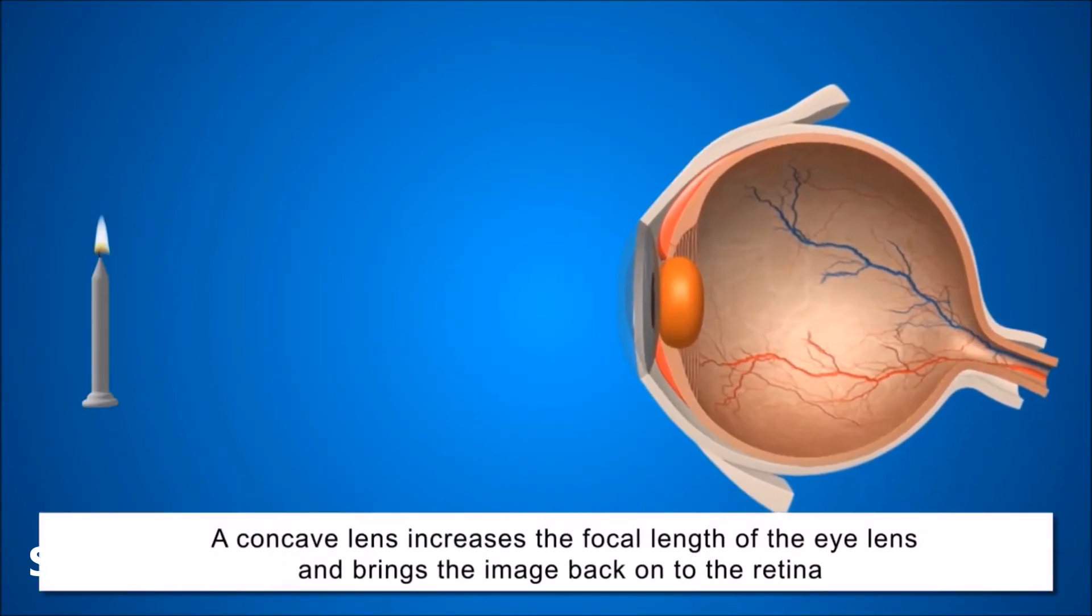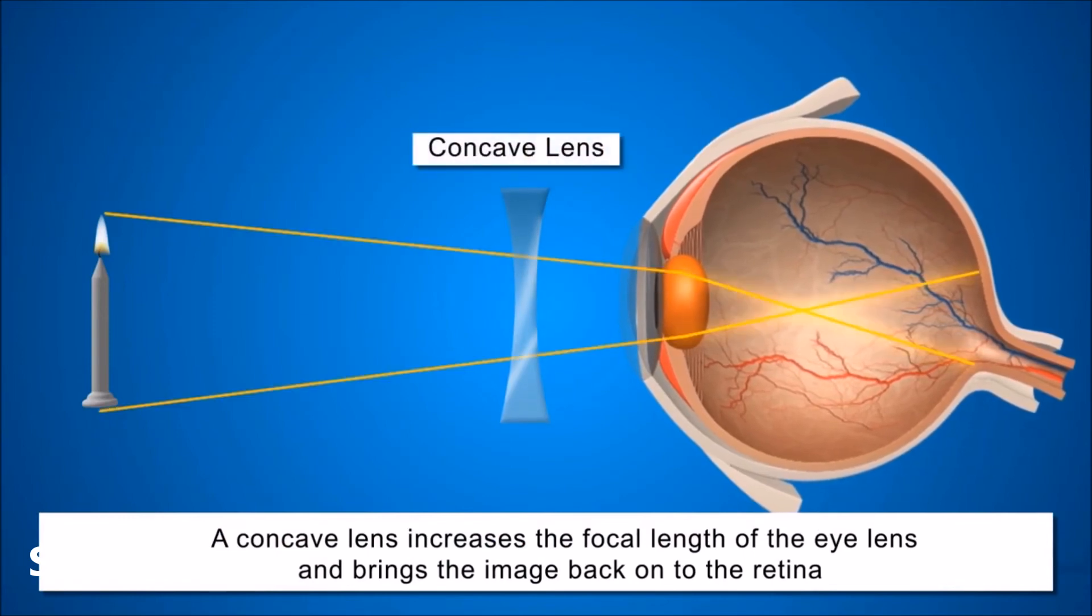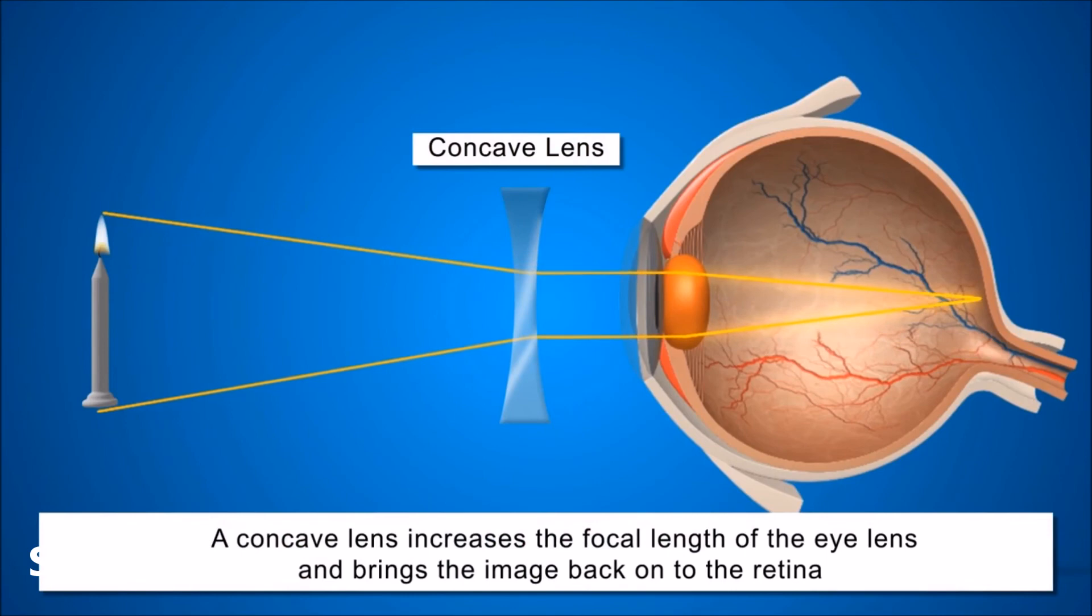This defect can be corrected by using a concave lens. A concave lens increases the focal length of the eye lens and brings the image back on the retina, and thus the defect is corrected.